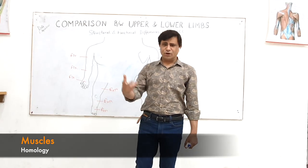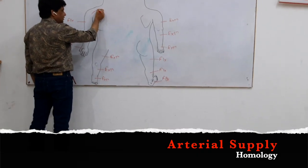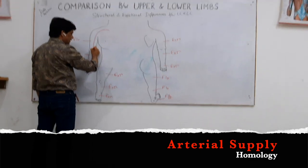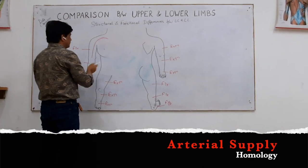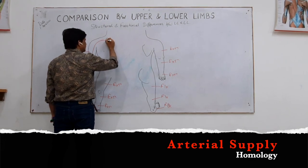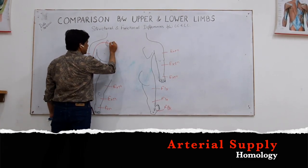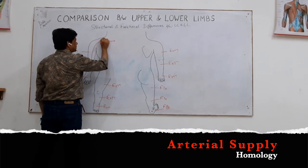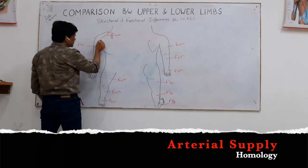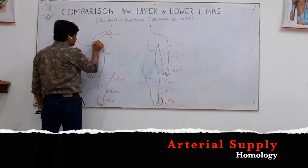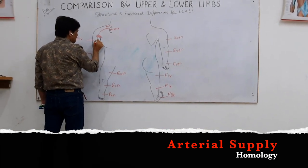Now about blood supply. The subclavian artery continues as the axillary artery, which continues as the brachial artery. The axillary artery gets its new name — brachial artery — after crossing the lower border of teres major.